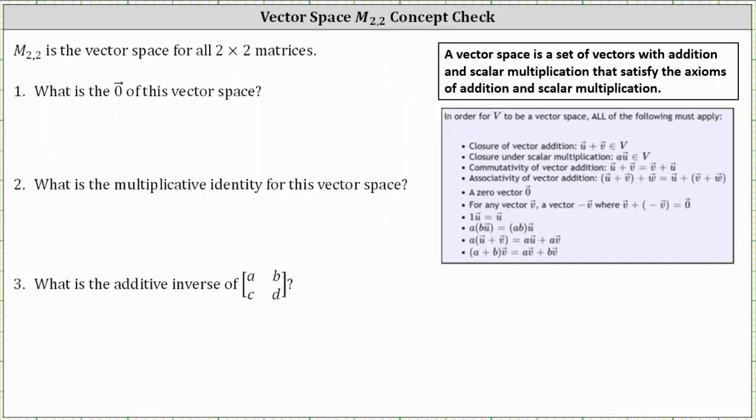M22 is the vector space for all two by two matrices. Number one, what is the zero vector for this vector space? The zero vector for this vector space would be the two by two matrix with all zero entries.